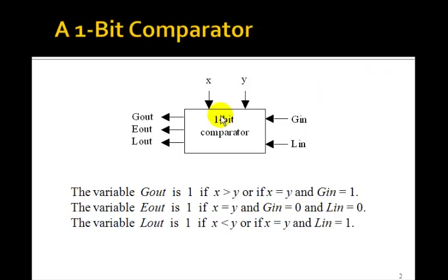Here's a 1-bit comparator that's going to compare a single bit x to a single bit y. Notice there are two other inputs, g in and l in, and three outputs: g out, e out, and l out.